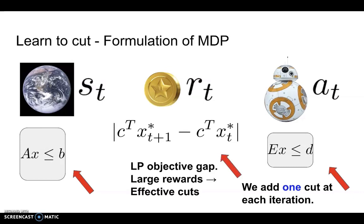The reward function is specified to be the objective gap between two consecutive LPs. By using such a reward function, we can ensure that the cutting planes are encouraged to achieve a big objective gap improvement as quickly as possible.